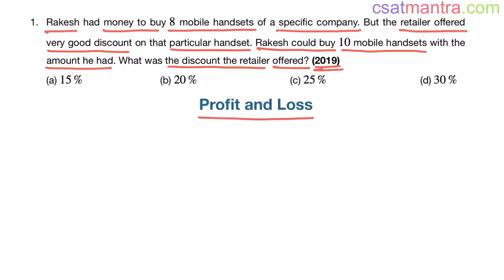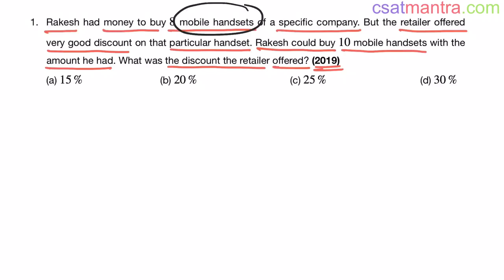Very easy question. In this problem we are not bothered about the cost of mobile handsets or their actual value. All we want is the discount in terms of percentage. So we are free to take the cost of mobile handsets as any value — the discount will be obtained and it doesn't depend on the cost. We are dealing with percentages, not exact values.